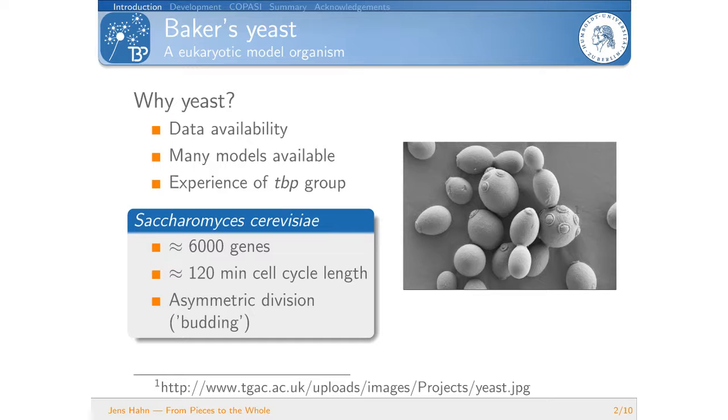So first of all we have about 6,000 genes and we have a cell cycle length of about 120 minutes and that is the goal for our simulations. We want to simulate one cell cycle meaning from one budding event to another budding event. In yeast the division is asymmetric and it's called budding meaning after the budding event you have two cells. One is a bit larger and one is a bit smaller. The larger cell is called the mother and the smaller cell is called the daughter cell. We want to simulate the fate of one new mother basically that is giving birth to another daughter cell. So we simulate one cell cycle only.